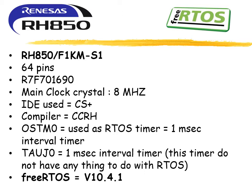It uses an 8 MHz crystal. This is the F1KM-S1 family. I will be using CS+ IDE and CCRH compiler — both are free to use. The OS timer will be used with a one millisecond tick interval. Another timer, TAUJ, is also used but has nothing to do with FreeRTOS. OSTM is the main FreeRTOS OS timer running at one millisecond.